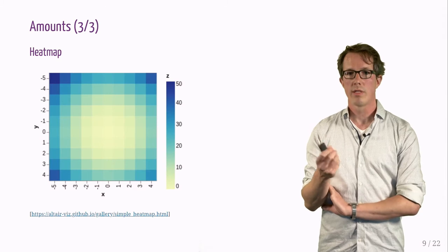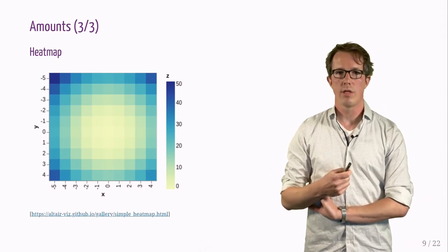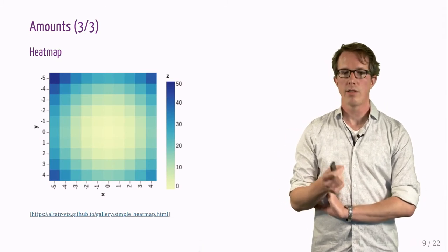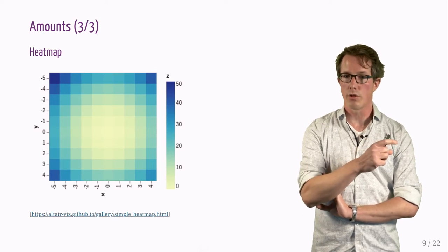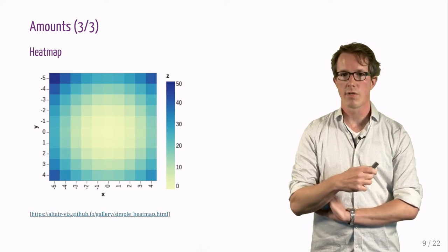The heat map is a popular way of visualizing amounts depending on two variables. It is related to the hexagonal and square bin plot, which we have seen a couple of slides earlier.